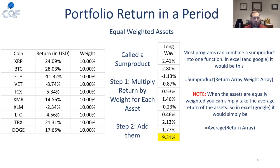You don't have to do this the long way, whether you're in Excel, MATLAB, R, or Google Docs. The actual shorthand in Google or Excel is the SUMPRODUCT formula, which does the whole thing in one burst to get that 9.31%. When your assets are equally weighted, there's a pretty neat shortcut: you can just average all your returns — the 24.09% for Ripple all the way down to 17.65% — and you would get 9.31%.